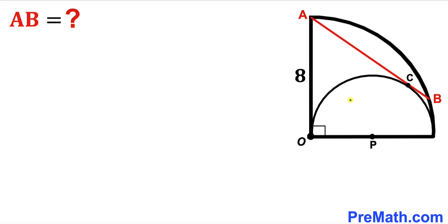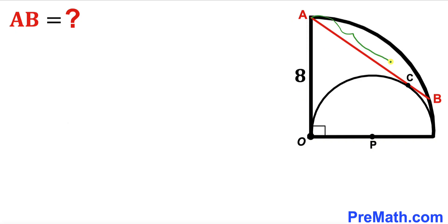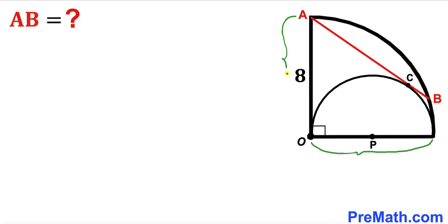Welcome to pre-math. In this video we have a semicircle with center P fully inscribed in a quarter circle with center O, such that the radius of this quarter circle is 8 units. AB is a chord for this quarter circle, and this chord AB is tangent to the semicircle at point C. Furthermore, the diameter of this semicircle is equal to the radius of this quarter circle, and our task is to calculate the AB length.